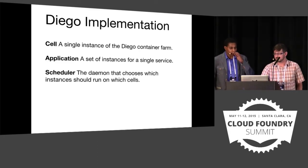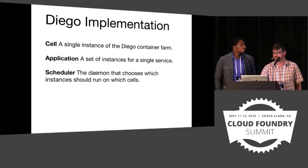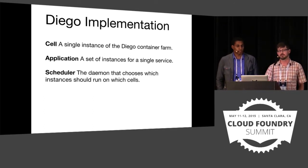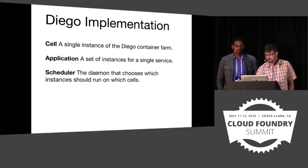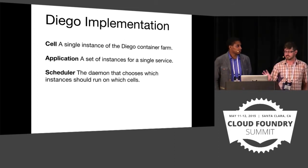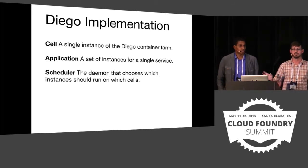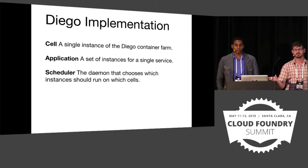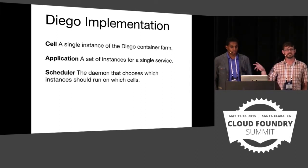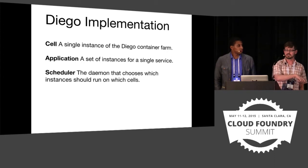We're going to go over an example of how we implemented this in our spike — a description of the components we ended up making on Diego, and a walkthrough of an example scheduling so you can get a visceral feel for what this would look like. A few Diego concepts you need to know: a cell is an individual virtual machine in the container farm — a VM that runs Cloud Foundry applications in containers.